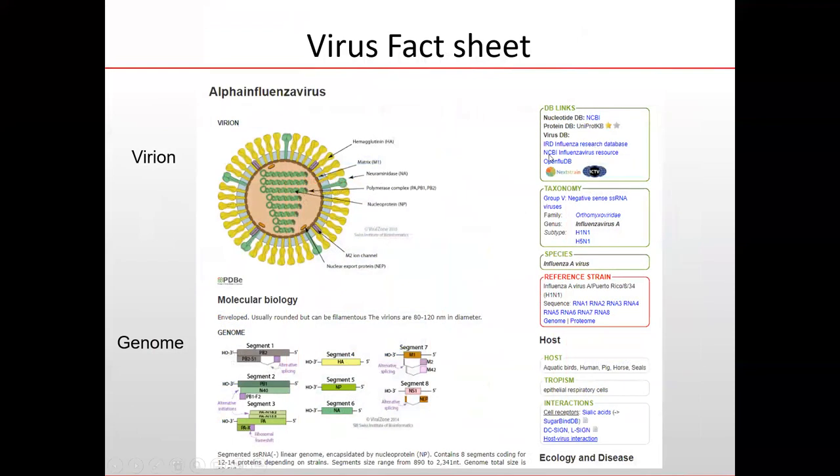The virus fact sheets are really the core part of ViralZone, in which for all kinds of genus and families, we have a fact sheet that describes the knowledge you need to understand a little bit more about this virus. It's the idea that for people having basic knowledge of molecular biology of cells that you learn in school—not specialized courses, but like what is a ribosome, transcription, replication, and so on—this is what you need to know to understand a bit about the virus we're talking about.